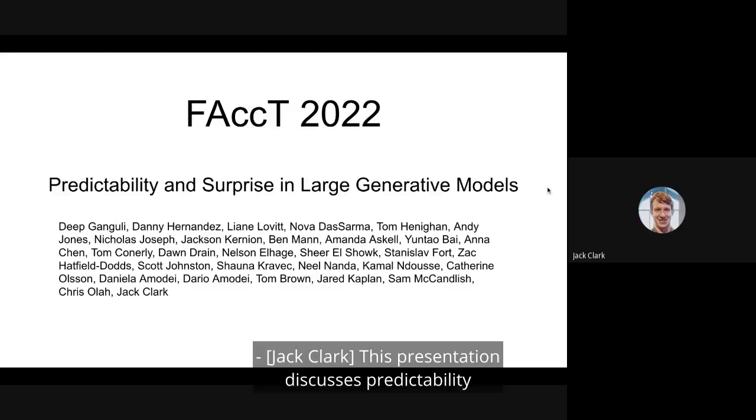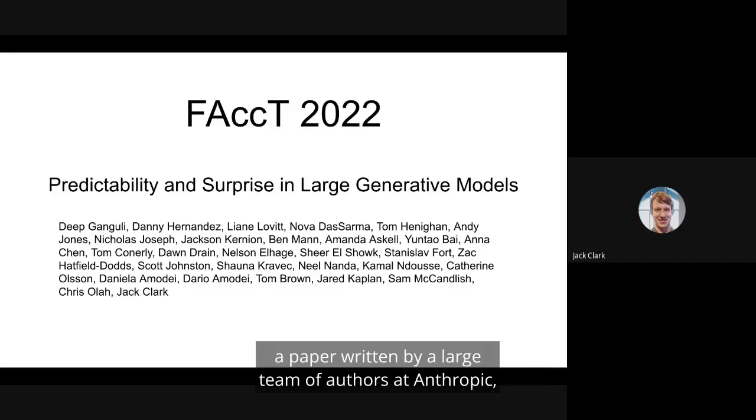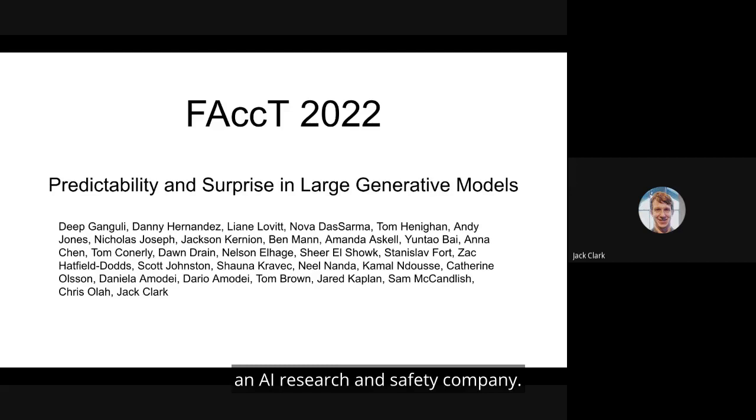This presentation discusses predictability and surprise in large generative models, a paper written by a large team of authors at Anthropic, an AI research and safety company.